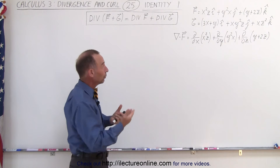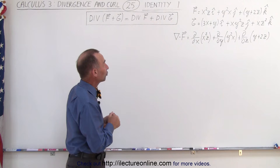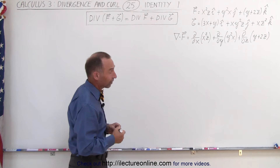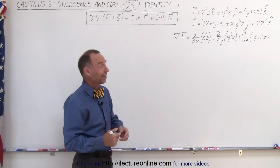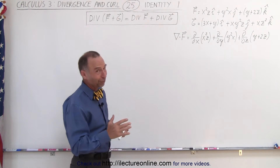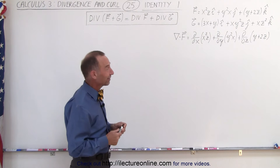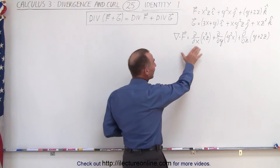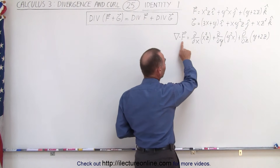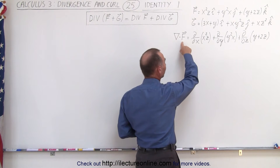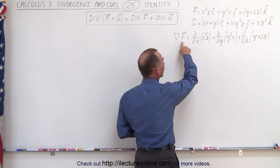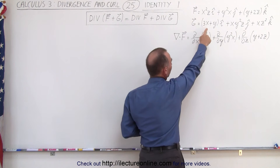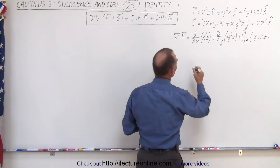We're going to do an example to show that that indeed works, at least for that example — and it should work, of course, for all examples. Now let's take the divergence of the vector field that we call f, and then we have another one called g, so we'll do it separately.